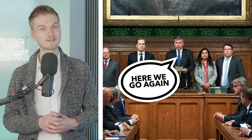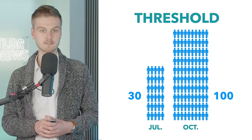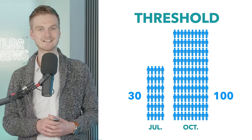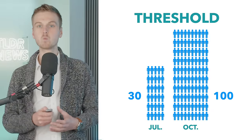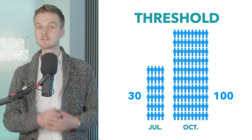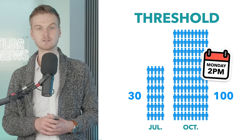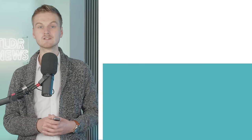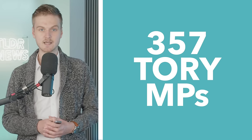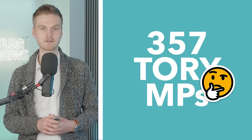But the threshold for candidacy would be set at 100 MPs, rather than just 30 MPs that were needed last time. These 100 Conservative MP backers had to be confirmed by 2pm on Monday to make it onto the ballot paper. Given that there were only about 360 Conservative MPs, this means that at most three candidates could get through.